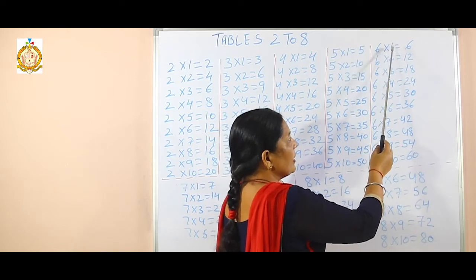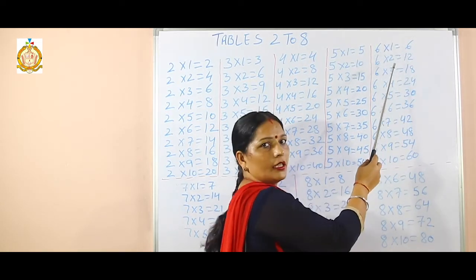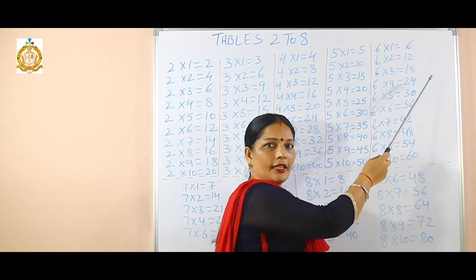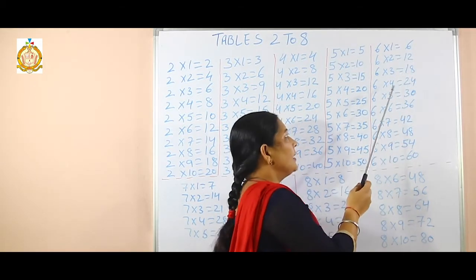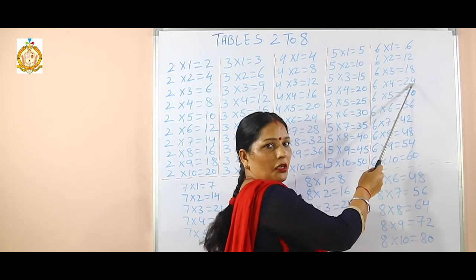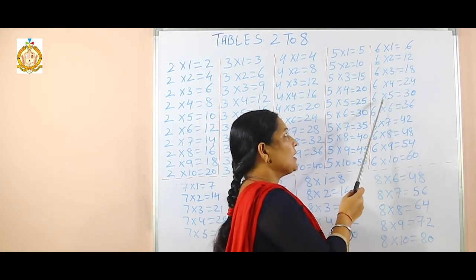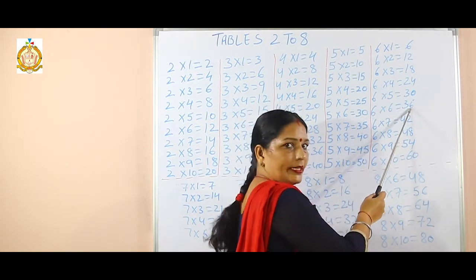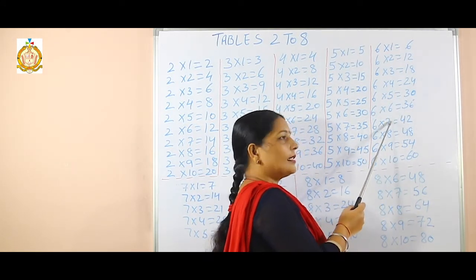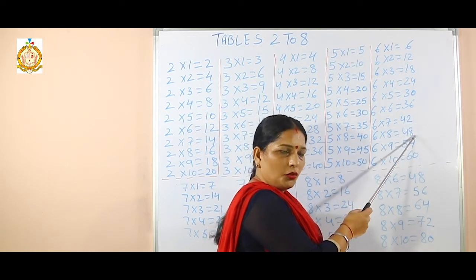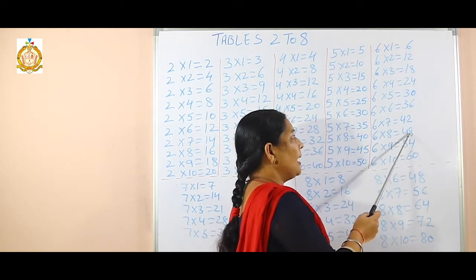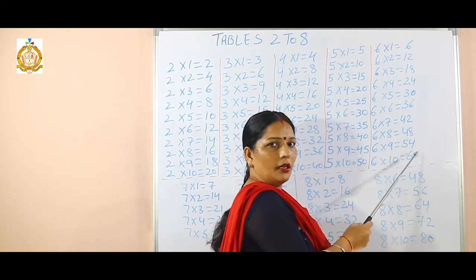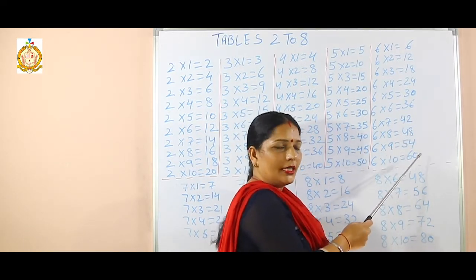Now come on the next table, that is 6. 6 ones are 6, 6 twos are 12, 6 threes are 18, 6 fours are 24, 6 fives are 30, 6 sixes are 36, 6 sevens are 42, 6 eights are 48, 6 nines are 54, and 6 tens are 60.